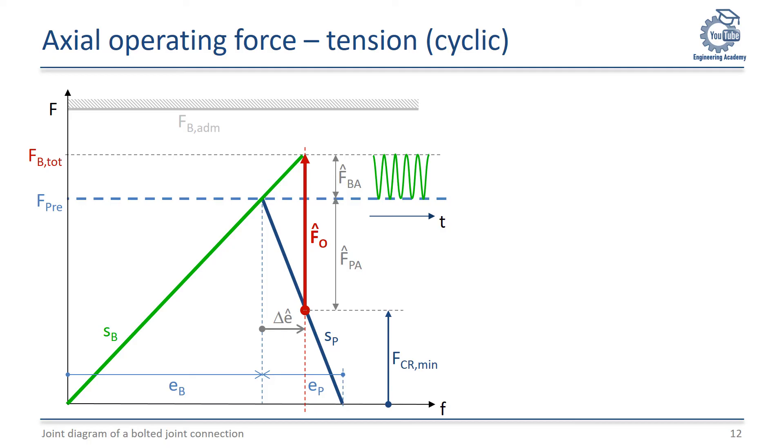When we plot the bolt force as a function of time, then FB total results in an equivalent upper stress level sigma EU and the pretension force in an equivalent lower stress level sigma EL. Those two stress levels define the medium stress level sigma EM and the stress amplitude sigma EA.